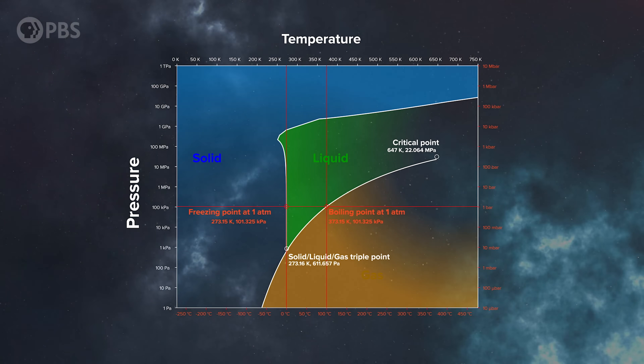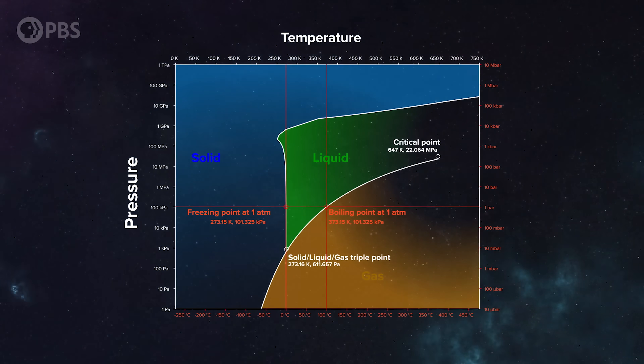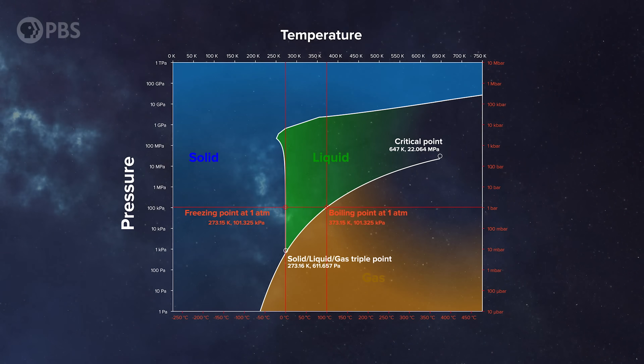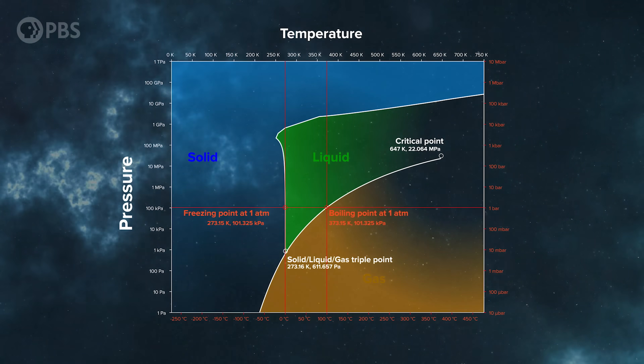Of course, it's a bit more complicated than this. Transition temperatures depend on the material, but they also depend on pressure. For example, water boils and freezes at a lower temperature on a mountaintop where air pressure is low. So instead of a one-dimensional relationship between phase and temperature, think of a two-dimensional relationship with both temperature and pressure. We call this a phase diagram.